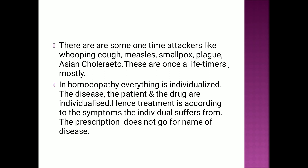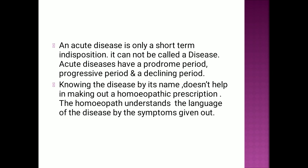There are some one-time attackers like whooping cough, measles, smallpox, plague, and Asiatic cholera. These are mostly once-in-a-lifetime occurrences — that is a non-recurring acute miasm. The other type of acute miasm is a recurring miasm. In acute diseases, there is a prodromal period, period of progression, and a declining period. In chronic diseases, there is a prodromal period and period of progression, but there is no period of decline. One miasm may convert into another miasm.